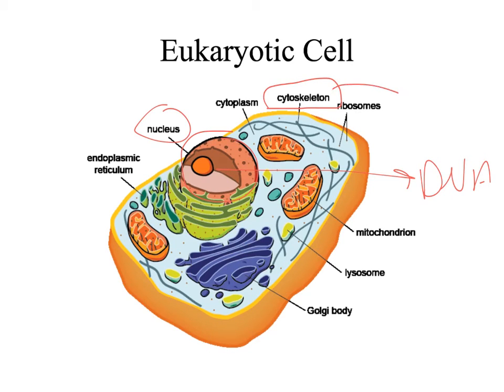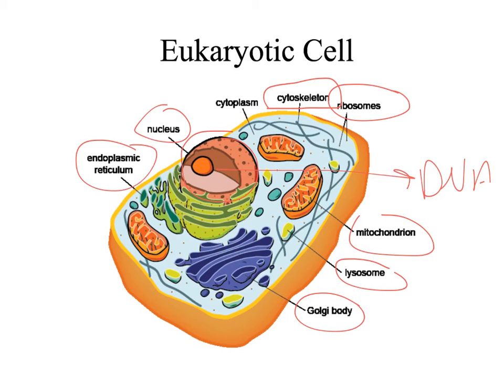There is also a ribosome, but in addition to ribosomes there are other membrane-enclosed organelles: mitochondria, lysosomes, Golgi apparatus, endoplasmic reticulum, and other organelles.